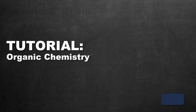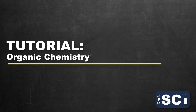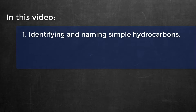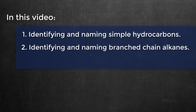This tutorial deals with a branch of organic chemistry, specifically an introduction to hydrocarbons. We're going to talk about how we go about naming them, how we identify them both by their name and by their structure, and then we'll get into branched-chain hydrocarbons and how we go about naming and drawing those. At the end of this video we'll look at how we can use names to draw structures and identify any mistakes or errors in that name or structure.